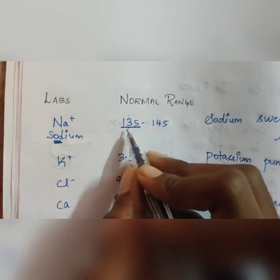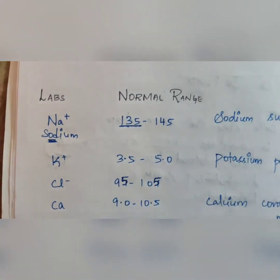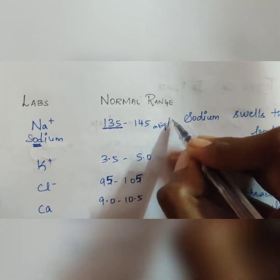The odd numbers are 3 and 5, so 135 to 145 mEq per liter.